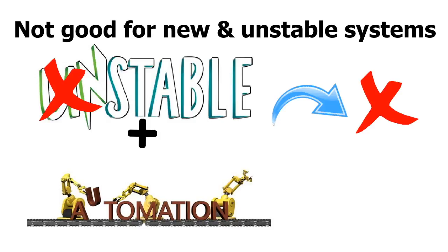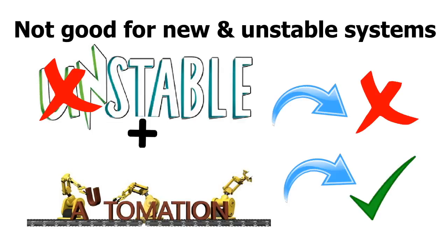Once the system gets stable after certain releases and is looking better, then automation — done as per standard procedure with a framework — is a very nice solution. It can help you reduce work, improve timeliness, and verify things for a stable system in a much better way. Please refrain from using automation for a newly developed or unstable system — it is a very bad idea.